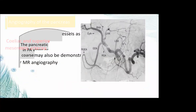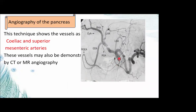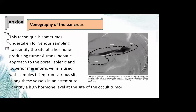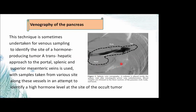Angiography of the pancreas shows the vessels such as the celiac trunk, superior mesenteric artery, splenic artery, gastroduodenal artery, left and right hepatic arteries, and MRI angiography. Pancreatic venous sampling is done by placing a catheter in the splenic vein after transhepatic catheterization, with samples taken from three sites — tail, body, and head — to identify high hormone levels or localize hormone-secreting tumours.